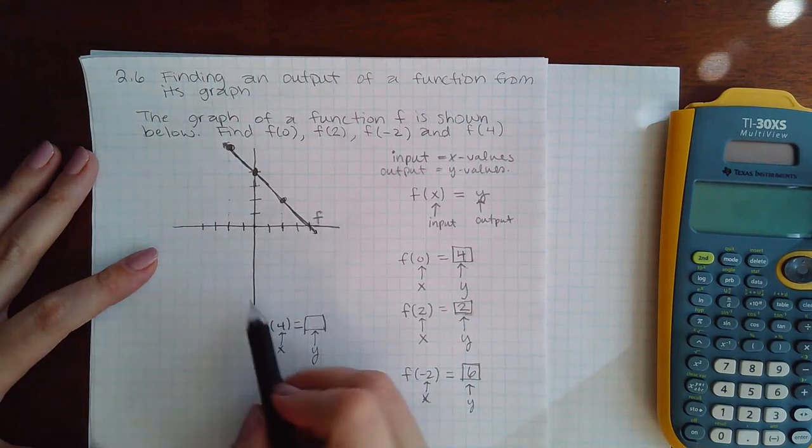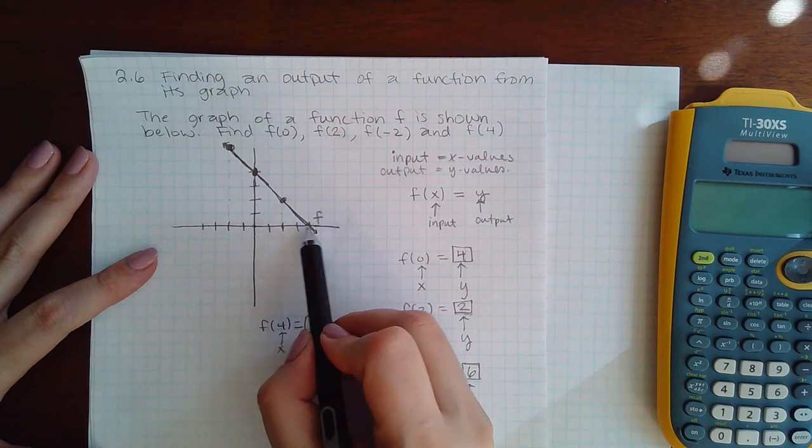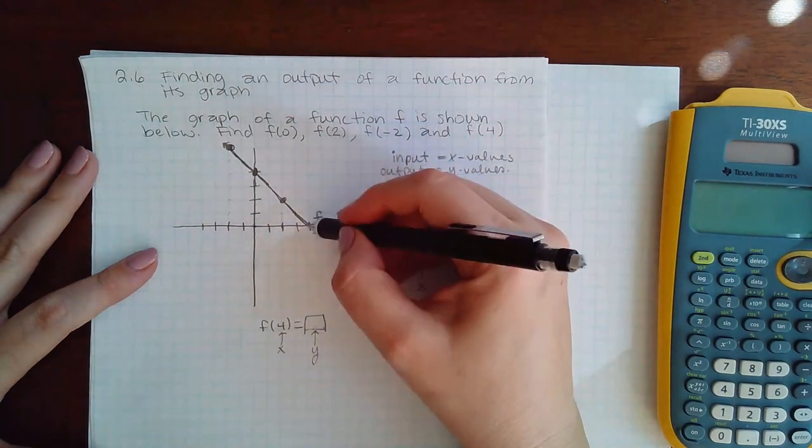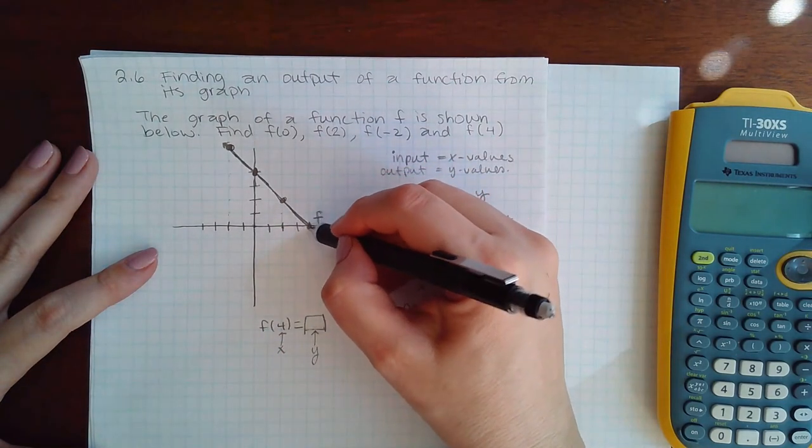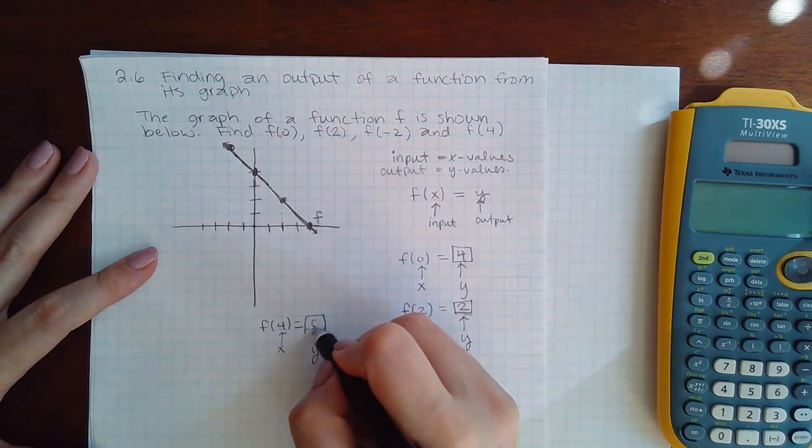Finally, f(4) means I'm going to go over to the x value 4, but I don't have to go up or down to get to the graph because I'm already on the graph. What is the y coordinate here? It is 0.